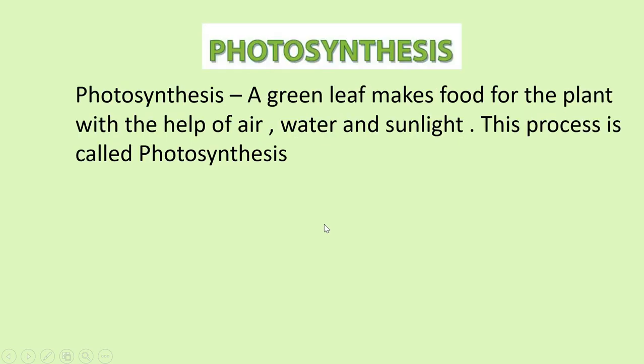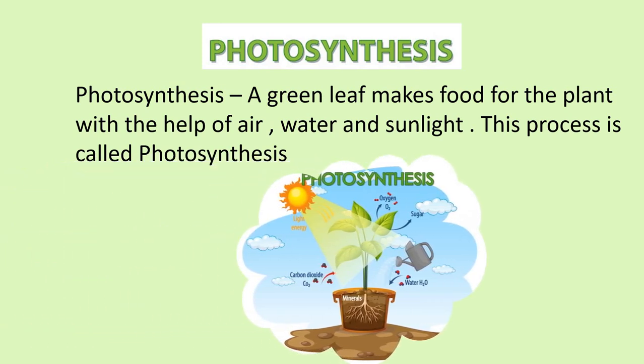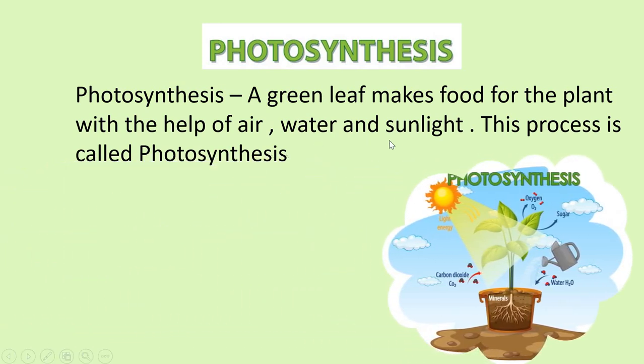Now, what is photosynthesis? A green leaf makes food for the plant with the help of air, water, and sunlight. This process is called photosynthesis. See the picture also? So, what are required? Air, water, and sunlight. And this process is called photosynthesis.